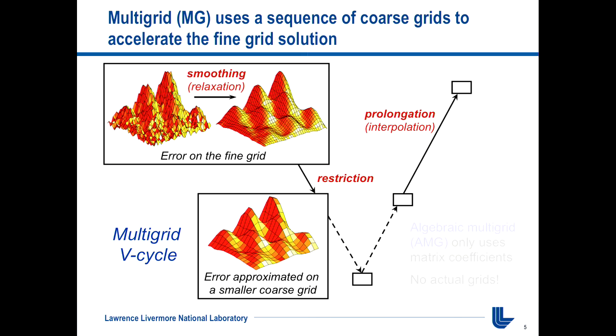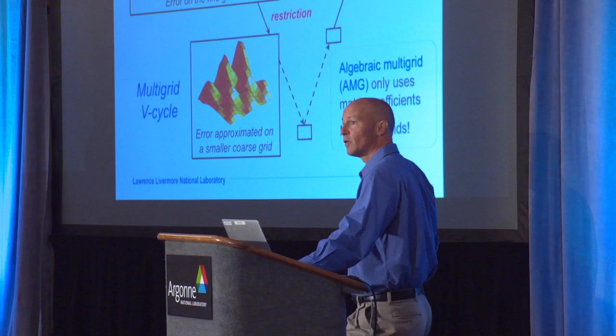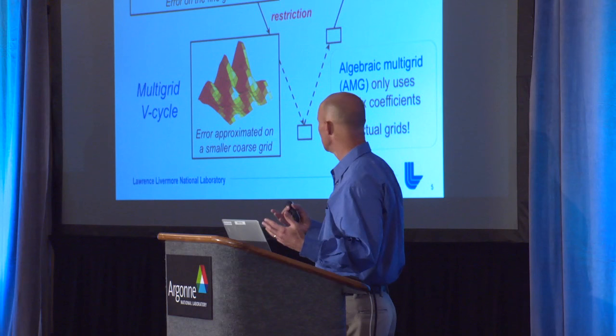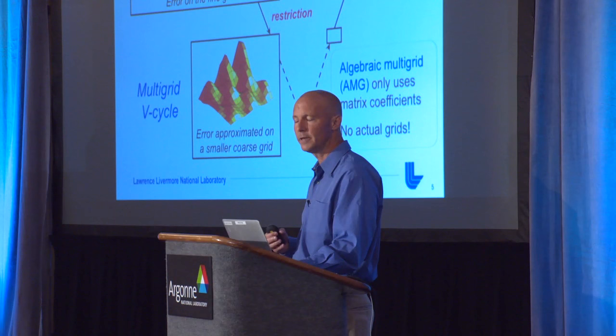That was a geometric picture with nice geometric grids. Often problems come from all kinds of different places — unstructured grids or something that's not even a grid-based problem. So there's something called algebraic multigrid, which has the same multigrid principles but just uses the linear system or matrix equations themselves. There are no real grids in algebraic multigrid; instead you use the graph of the matrix to serve as your grid, and you coarsen the graph and build coarse systems. It's one of the main workhorse solvers we have in HYPRE and can be applied to a lot of different problems.